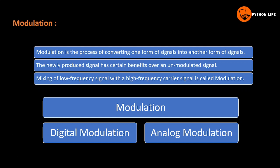Modulation is the process of converting one form of signals into another form of signals. The newly produced signal has certain benefits over an unmodulated signal.